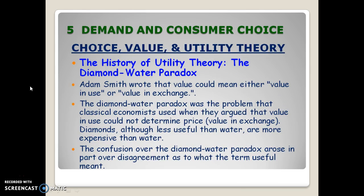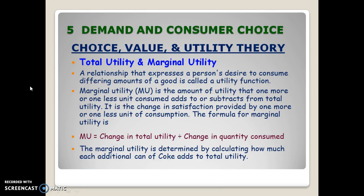Now let's go to the utility maximization theory. Utility looks at the satisfaction from consuming a good or service. Consumers have different utilities for various goods and services. We evaluate this based on total utility — the total satisfaction from consuming a good or service — and marginal utility — the additional satisfaction from consuming a good or service.